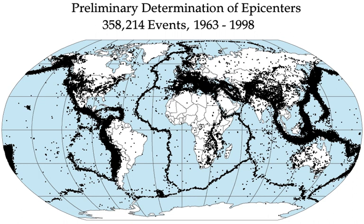The objective of earthquake engineering is to foresee the impact of earthquakes on buildings and other structures and to design such structures to minimize the risk of damage. Existing structures can be modified by seismic retrofitting to improve their resistance to earthquakes. Earthquake insurance can provide building owners with financial protection against losses resulting from earthquakes. Emergency management strategies can be employed by a government or organization to mitigate risks and prepare for consequences. Individuals can also take preparedness steps like securing water heaters and heavy items that could injure someone, locating shutoffs for utilities, and being educated about what to do when shaking starts. For areas near large bodies of water, earthquake preparedness encompasses the possibility of a tsunami caused by a large quake.